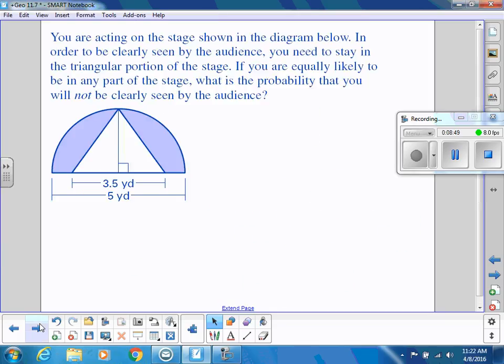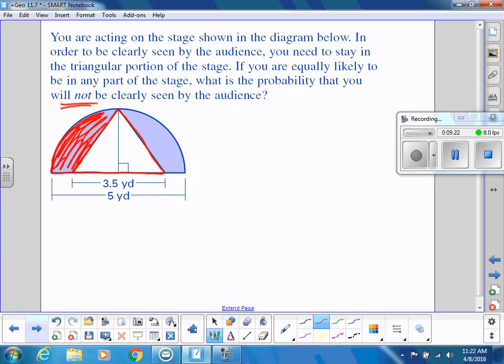Let's do one more, and then we'll leave the rest for in class. So we're acting on a stage in this diagram. In order to be seen by the audience, you have to stay in the triangular portion—that white triangle area. But you're equally likely to be in any part of the stage. What is the probability that you will not be clearly seen? So they want to know what is the probability of ending up in this shaded area, because then that will tell us how poorly our audience will experience our play—they won't be able to see us.